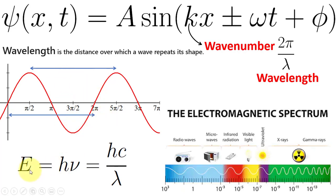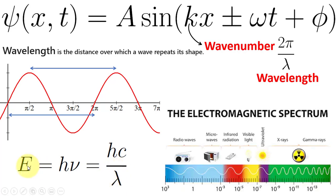Energy is inversely proportional to wavelength because E = hν and ν = c/λ, so energy is inversely proportional to λ. The shorter the wavelength, the higher the energy; the longer the wavelength, the lower the energy.